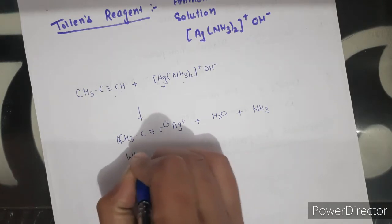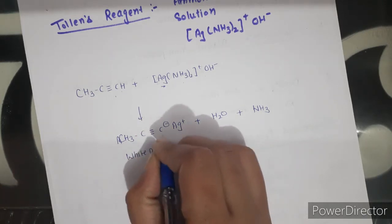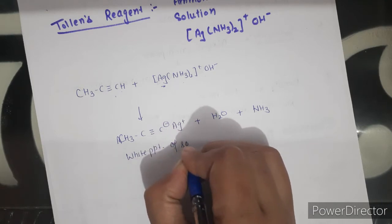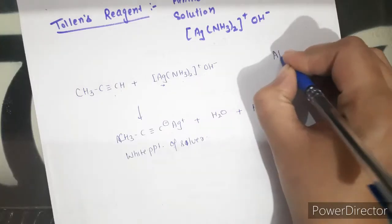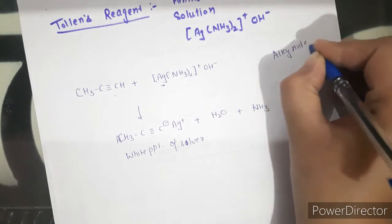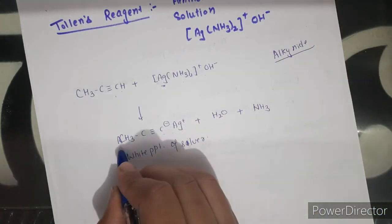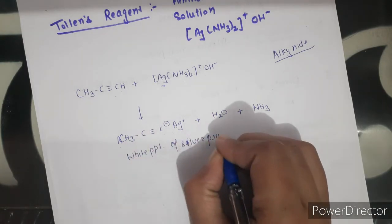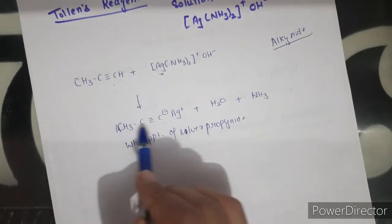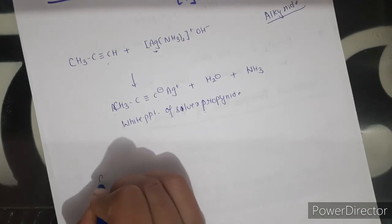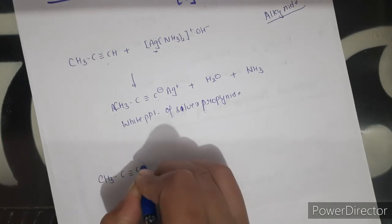The product is converted into a white precipitate of silver. The resulting anion is named as an alkynide. For example, if it contains three carbon atoms it is propiolide. So with Tollen's reagent, H⁺ is replaced by Ag⁺ to give a white precipitate — the corresponding alkynide.